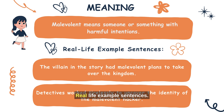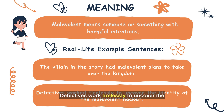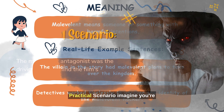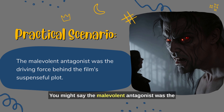Real-life example sentences: The villain in the story had malevolent plans to take over the kingdom. Detectives worked tirelessly to uncover the identity of the malevolent hacker. Practical scenario: imagine you're discussing a movie character. You might say, 'The malevolent antagonist was the driving force behind the film's suspenseful plot.'